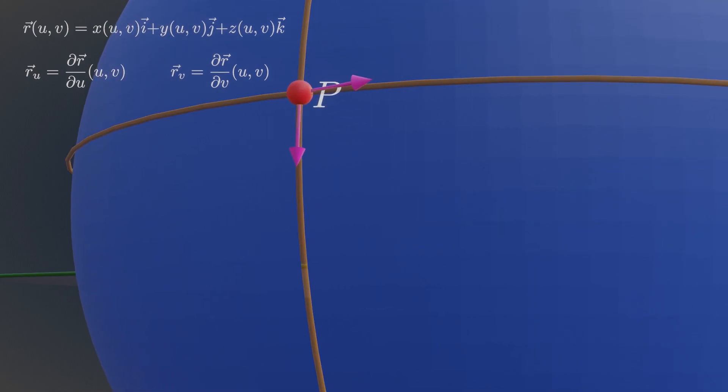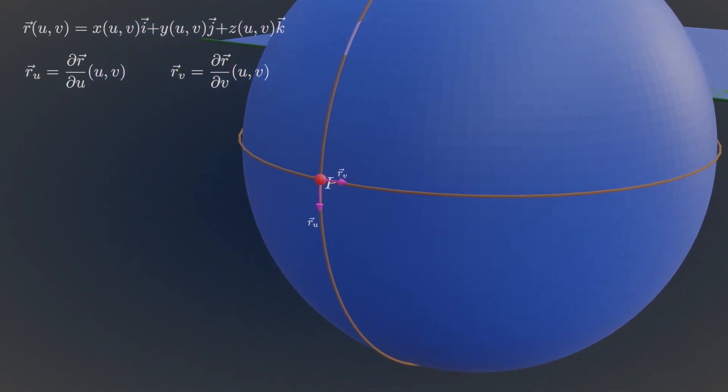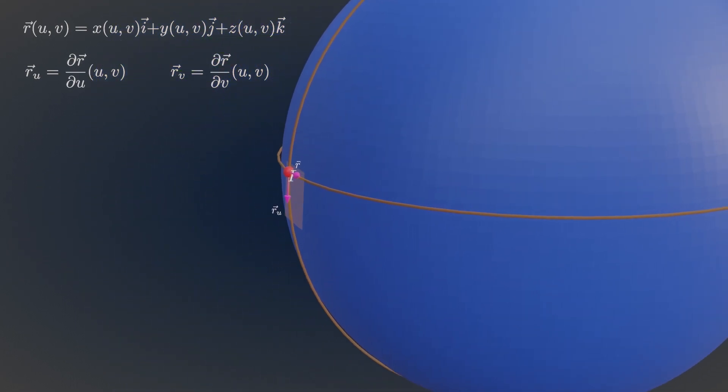The partial derivative at that point can be found, which is a vector. Notice these two unit tangent vectors create a plane, which is tangent to our surface.